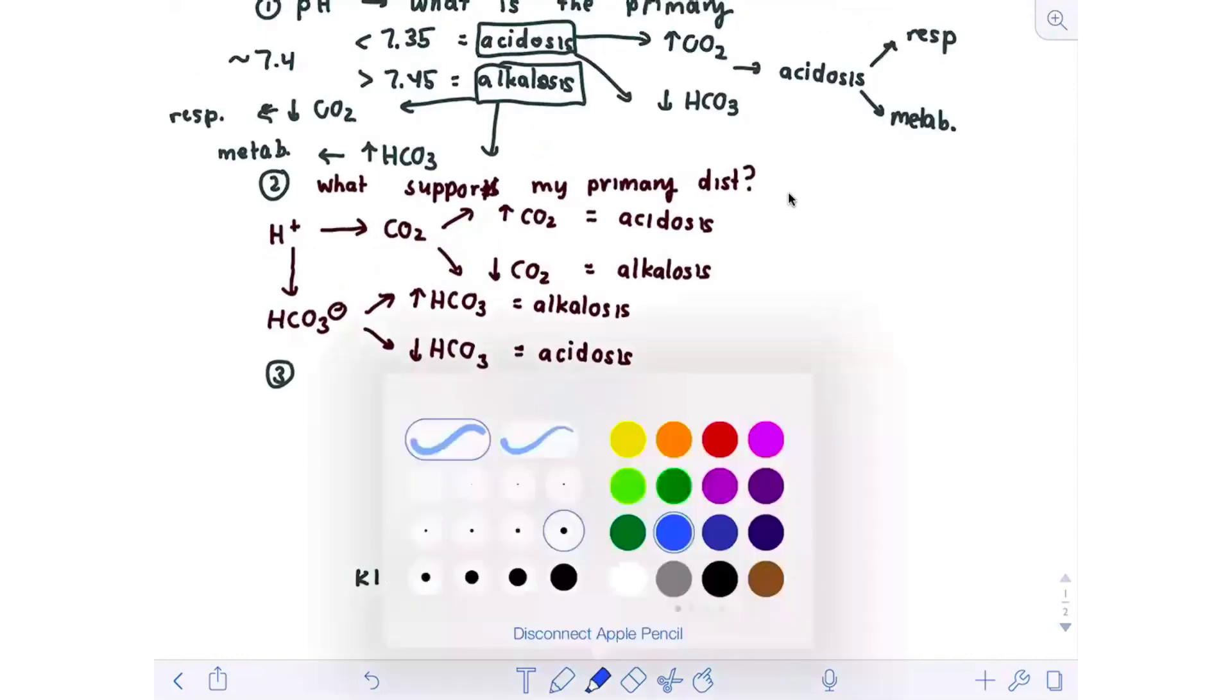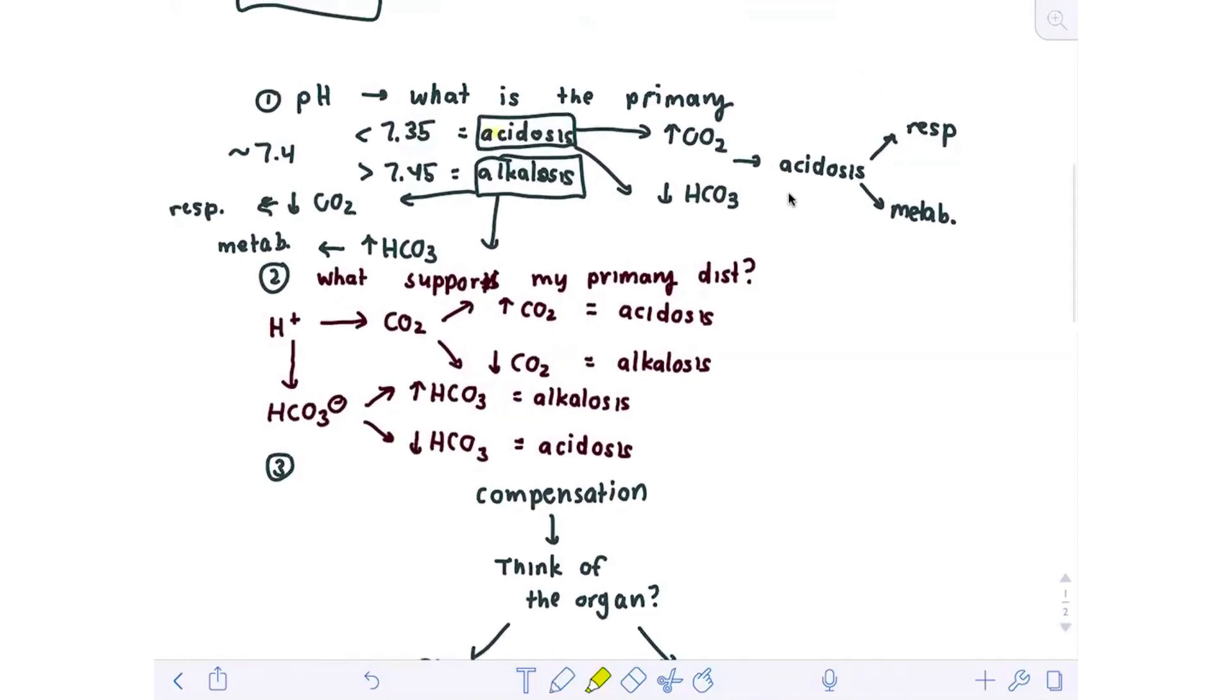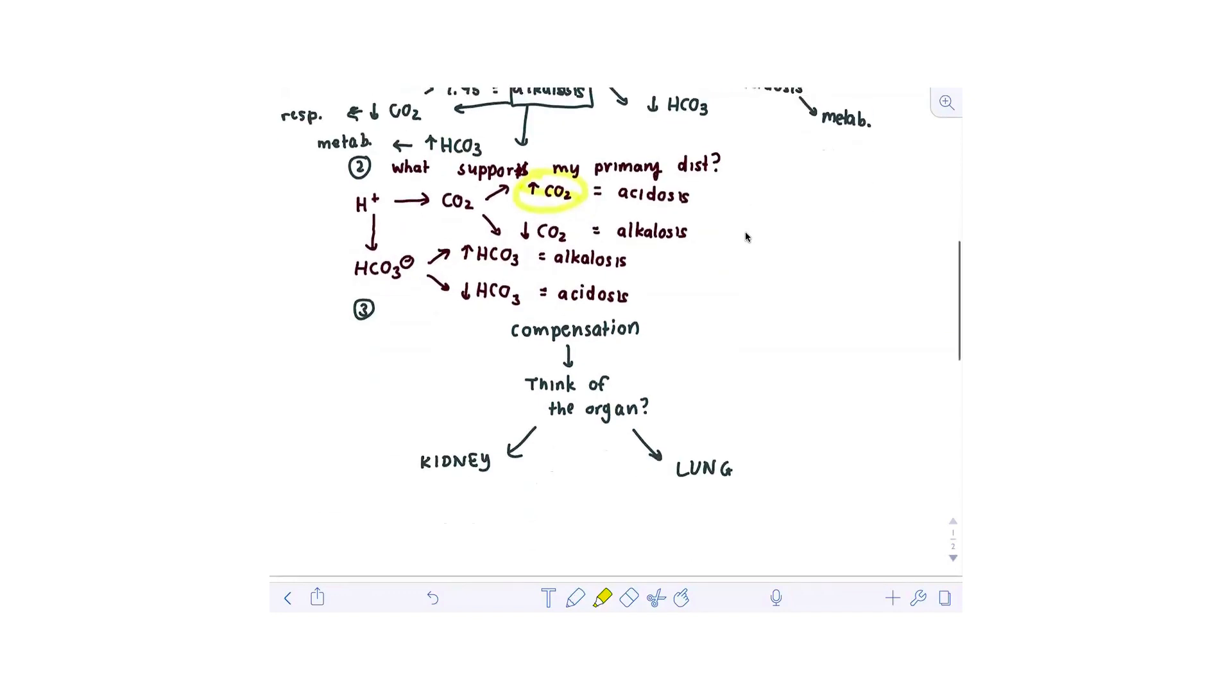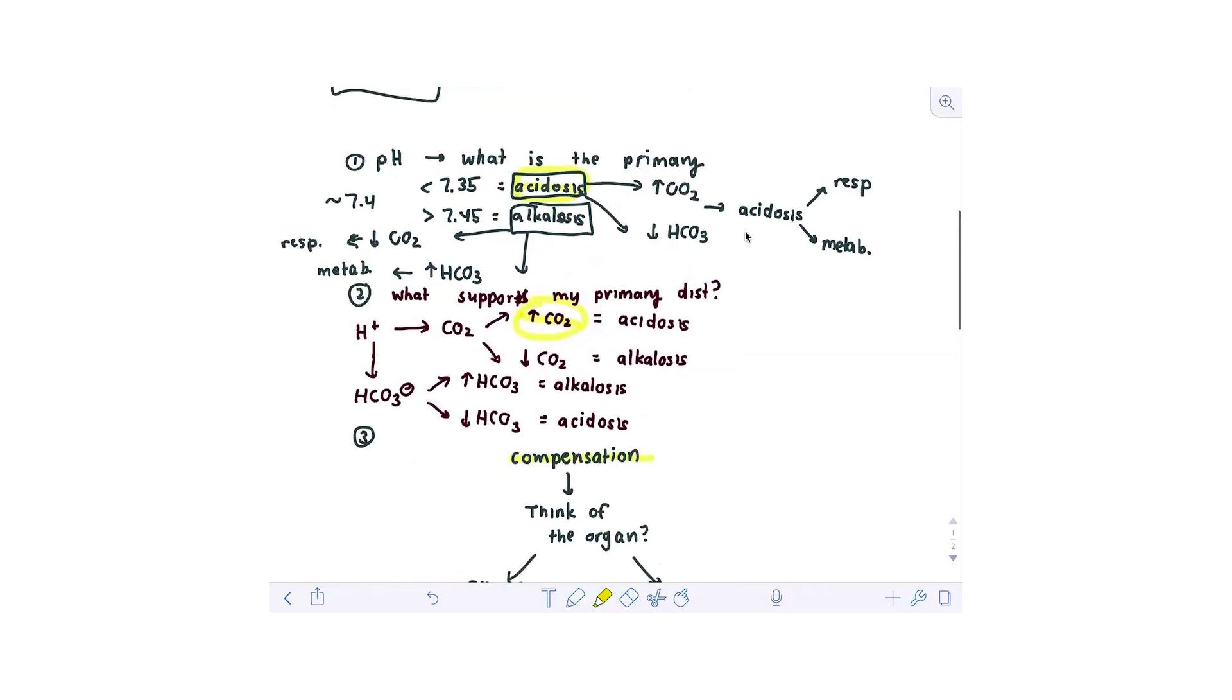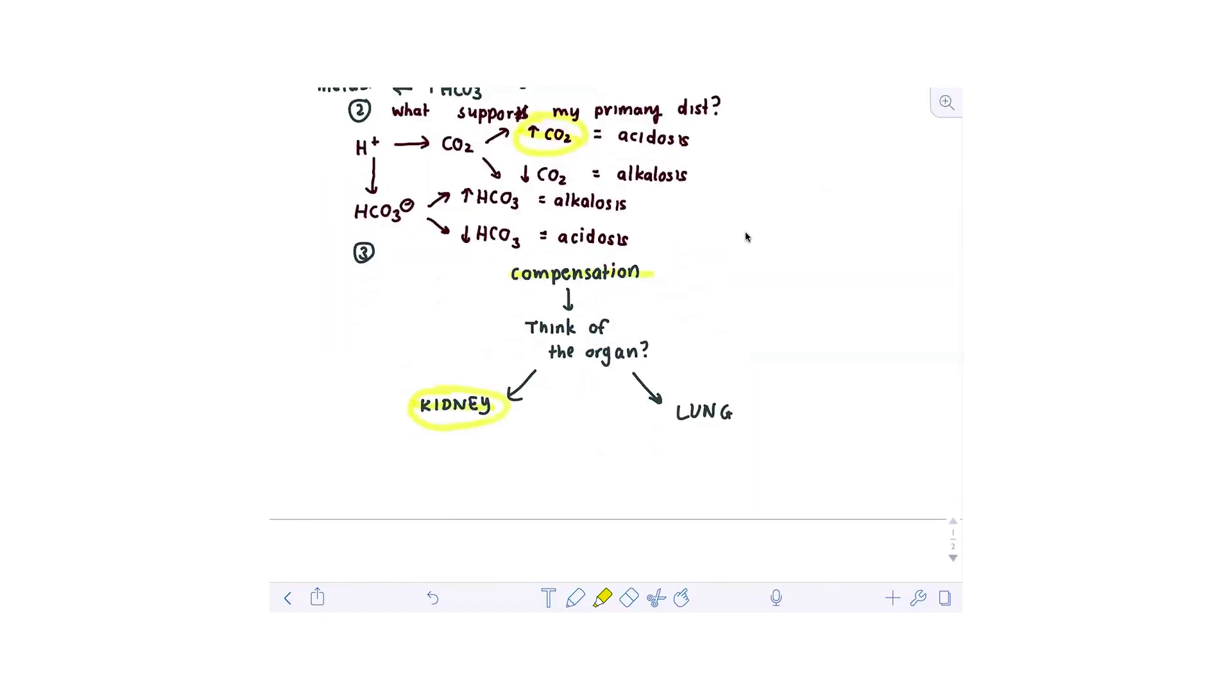So let's kind of go through a quick little example on this. Say that I have an acidosis and on my ABG, it is an elevated CO2. So if I have an elevated CO2 with an acidosis, what is that called? Respiratory acidosis. Then I come down to my compensation. What organ in a respiratory acidosis is going to be compensating? The kidney is the compensation, because the primary disturbance is a respiratory acidosis. So your lung is messed up. Then the organ that helps you compensate is a kidney. So it's opposite, essentially.